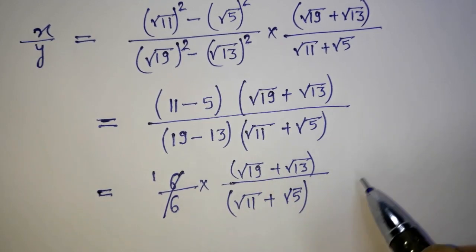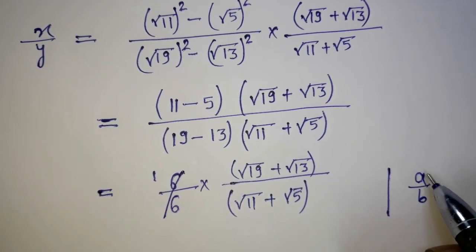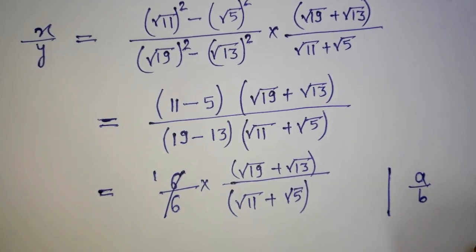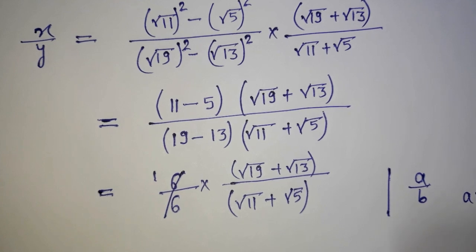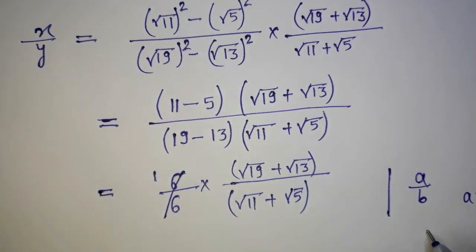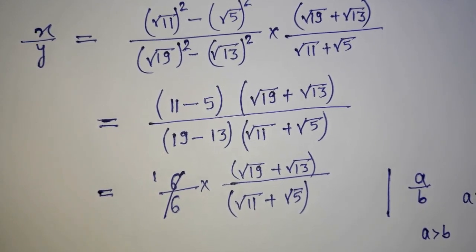We know that if a is divided by b, and if a is greater than b, then this value — a divided by b — will come out this way, and it is going to be greater than 1.